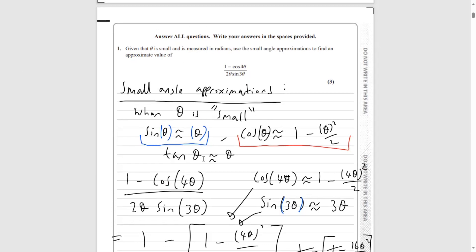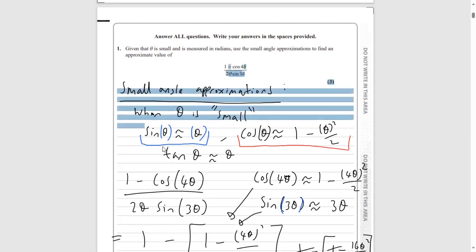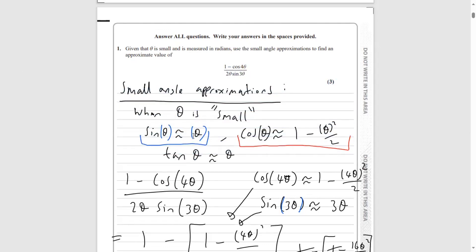If you see these approximations — sin θ ≈ θ, cos θ ≈ 1 - θ²/2, and tan θ ≈ θ — I said I was going to link proofs of those, but I haven't actually got any videos where I've proved those results. So that's what we're going to do today: prove these three small angle approximation results.